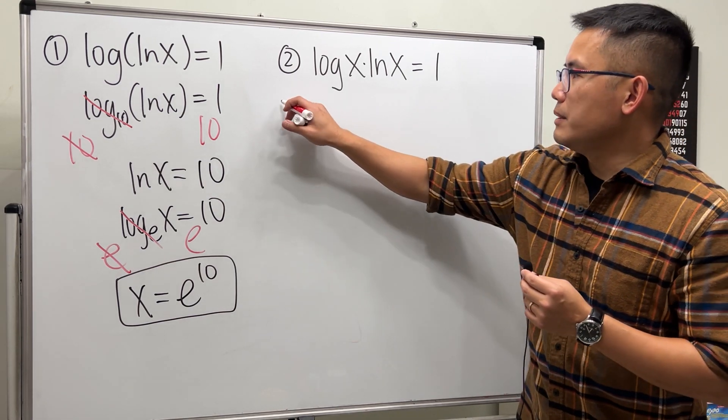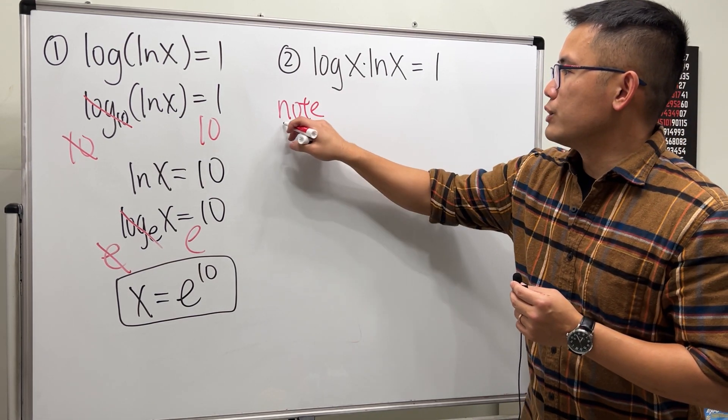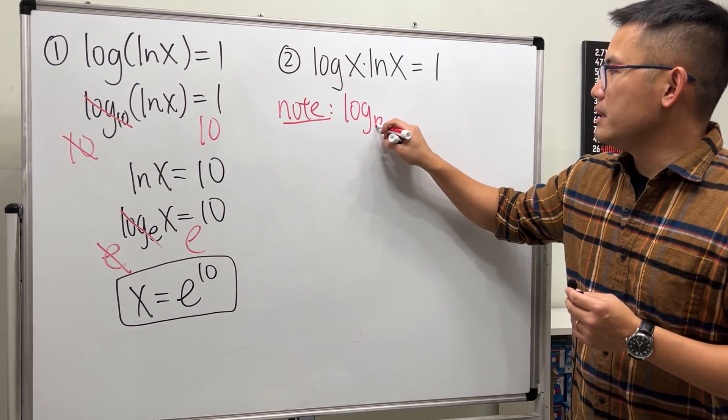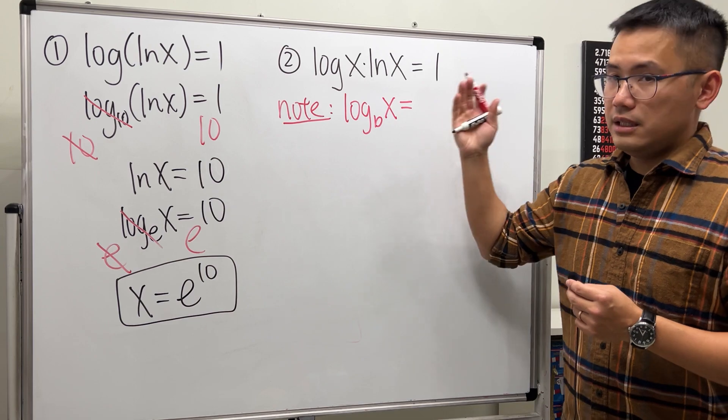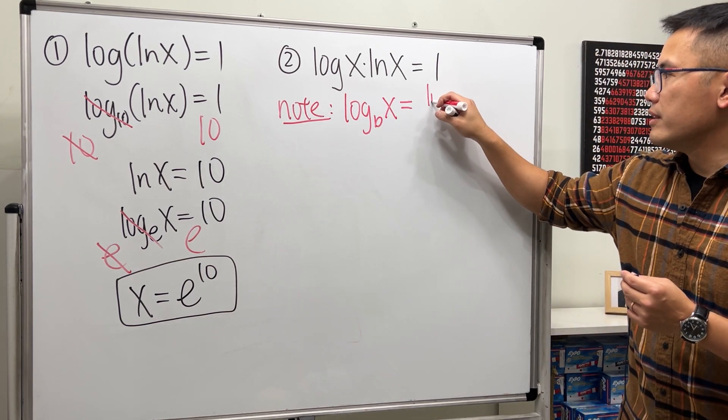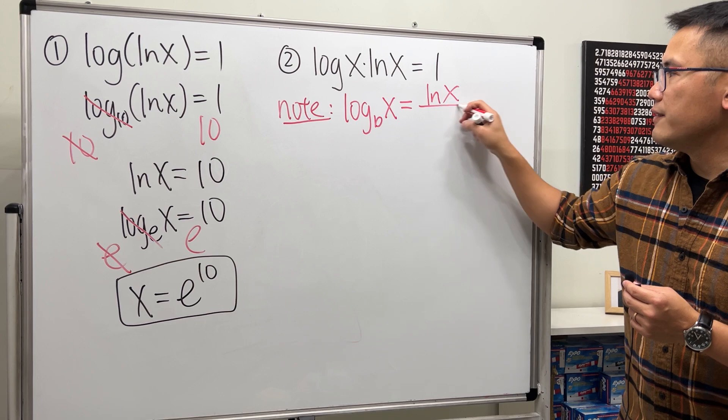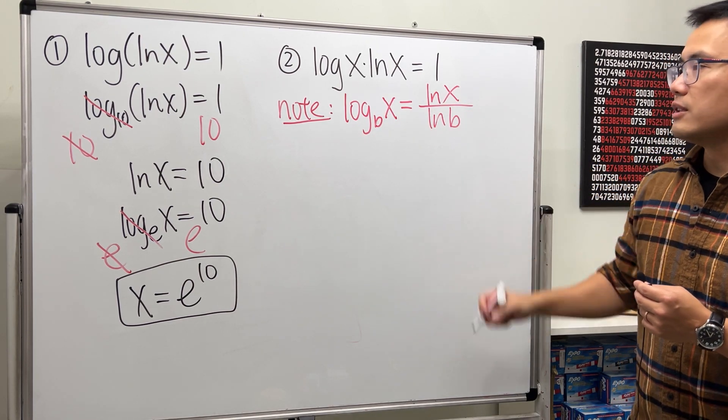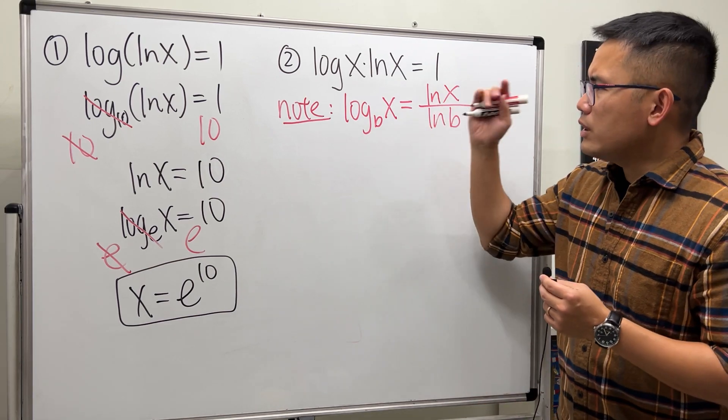So let me just remind you guys this right here. When we have log with any base b of x, it's the same as saying we can take the natural log and then do x first and then divide it by natural log of b. And this is the change of base formula.